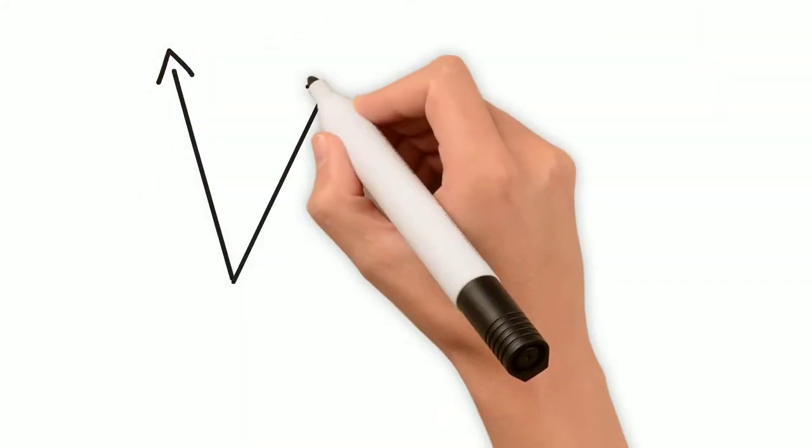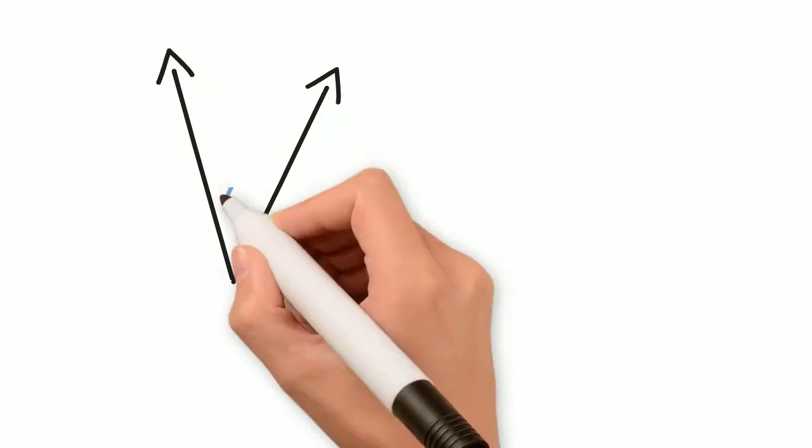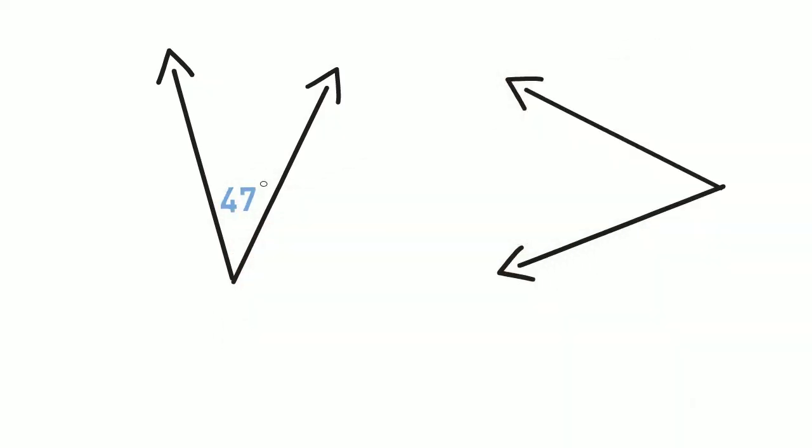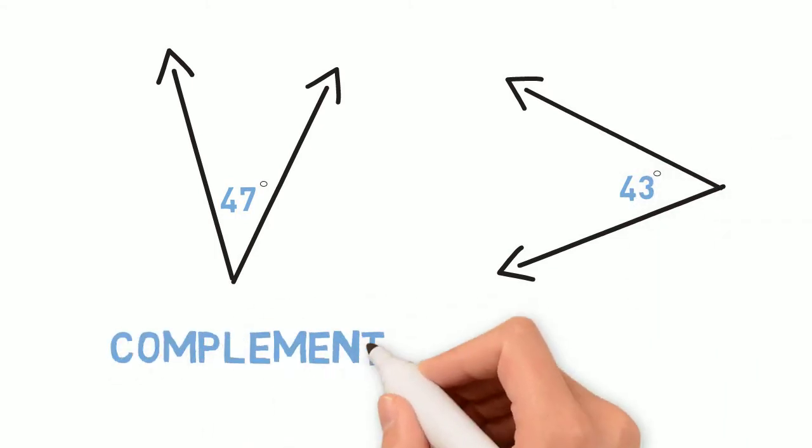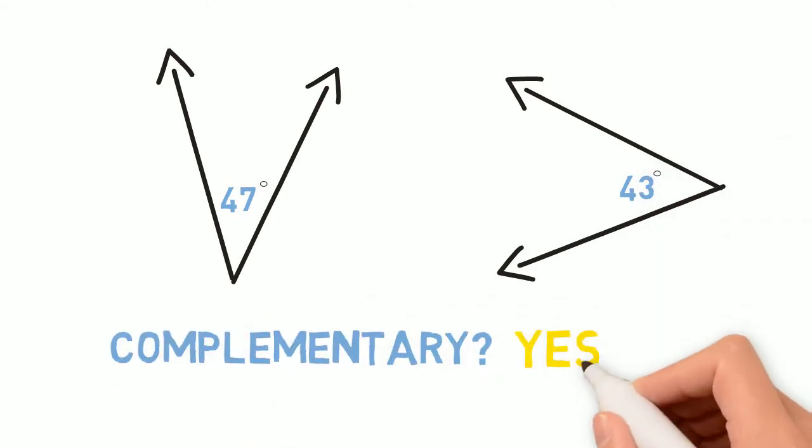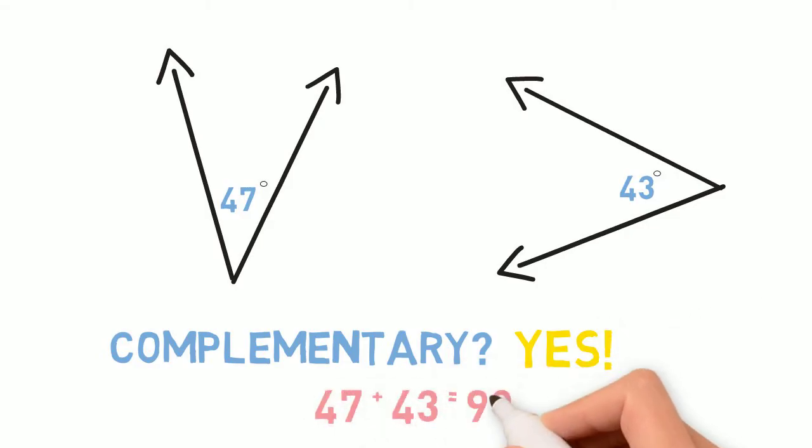Now let's look at these two angles. Here's a 47 degree angle, and here's a 43 degree angle. Do these two create a complementary angle? Yes, because 47 plus 43 equals 90.